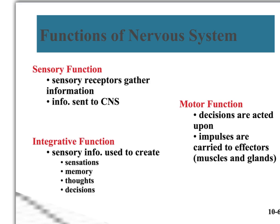Then we tend to act on that information, and that gets us into our motor function. The brain has made sense of all of that incoming information and it's going to tell the body what to do. We're going to send messages out to what we call our effectors — our muscles and our glands. So information is going back out on those peripheral nerves, telling the muscles and glands what to do.